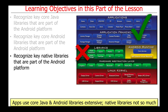Apps typically use the core Java and Android libraries extensively. They tend not to use the native libraries quite as much, at least not directly. These are typically accessed through Java wrappers that appear in the core libraries or application framework layers.